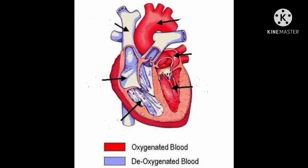It is necessary to keep the oxygenated blood separate from deoxygenated blood so that it may supply a good amount of oxygen to the body cells for respiration and release of energy. If the oxygen-rich blood mixes with the carbon dioxide-rich blood, that is deoxygenated blood, then the body cells will not be able to get enough oxygen for respiration, due to which less energy will be released in the body.